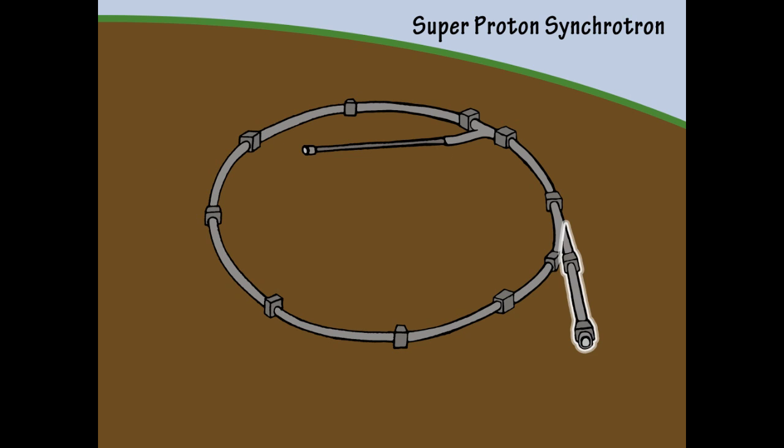It consists of a linear and circular accelerator. The linear accelerator accelerates the protons and sends them into the circular part, which is 6.9 km long. This accelerator uses magnetic fields to steer the proton beam through the accelerator. Electric fields are used to accelerate the proton beam.